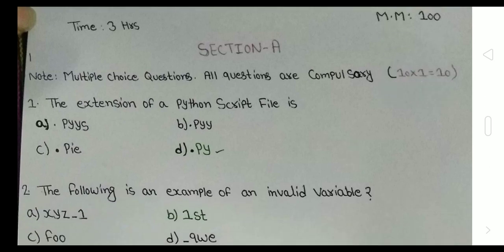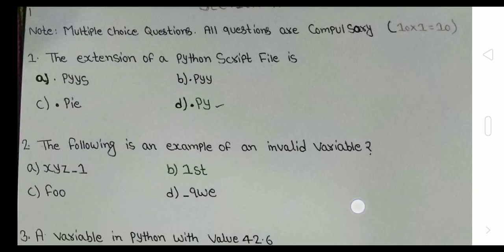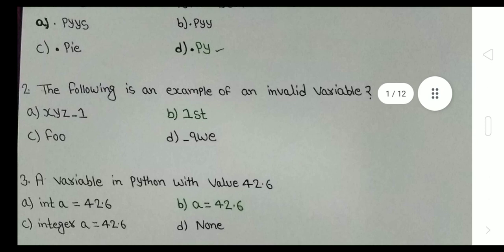The first one: the extension of a Python script file is, as you know, .py is the extension. The following is an example of an invalid variable. We have to choose the invalid example. The variable can't start with a numeric value. It can start with underscore or alphabet. So B is the invalid one because it starts with a numeric value.